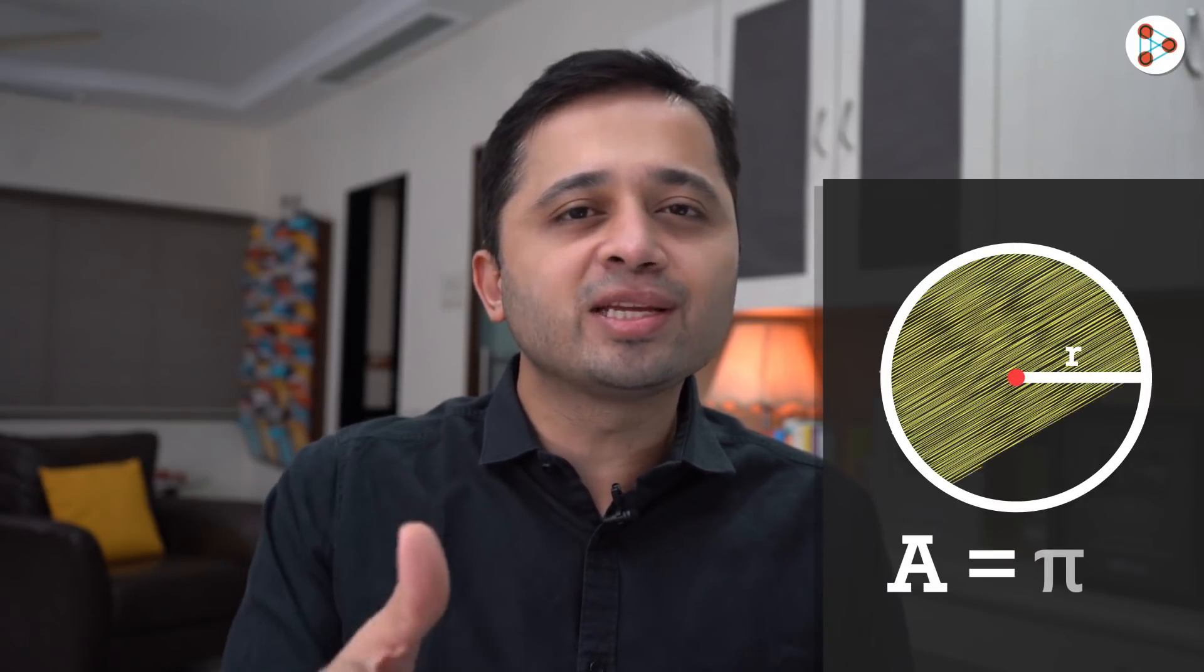If we have a circle with radius r, then its area is pi r squared. But why so?